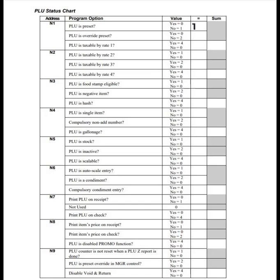A value of 1 means open, which is the opposite of preset. Then, can this PLU be overridden? I'm going to put no, because it's not preset anyway — that's a 2. Then, is this taxable by tax rate number 1? I'm going to say yes — that's where the 4 comes from. So you add those together: 1 plus 2 plus 4 gives you the value for N1, which in this case is 7. If we wanted that PLU to be preset, that would have been a 0 there, so our value would have been 6.